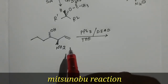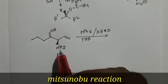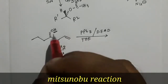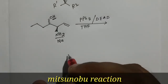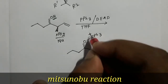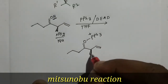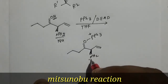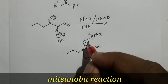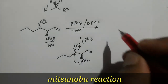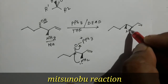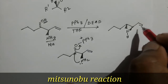Another example of the Mitsunobu reaction. Here an OH group is present and an amine is the nucleophile. The OH group will be converted to a good leaving group by attacking triphenylphosphine. The nitrogen lone pair of the NH2 group acts as the nucleophile and will attack above the plane, and the good leaving group will leave. So the product will contain a nitrogen-hydrogen bond with inverted configuration.